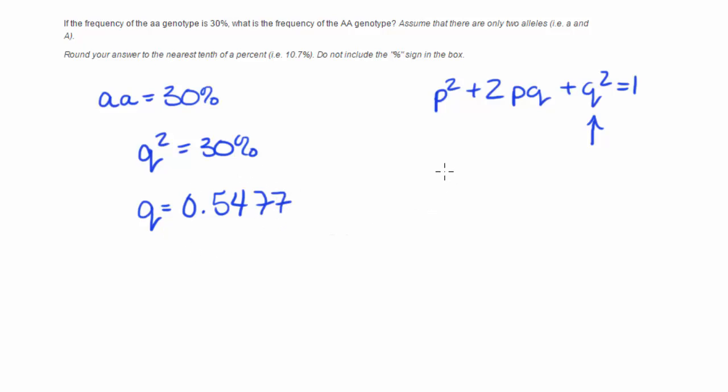And now if we know what Q is, because P plus Q equals 1, we can use this equation to solve for P. So if P plus Q equals 1, then P plus 0.5477 will equal 1. I'm just going to take 1 minus 0.5477 to get what my P is equal to. And so P is equal to 0.4523.